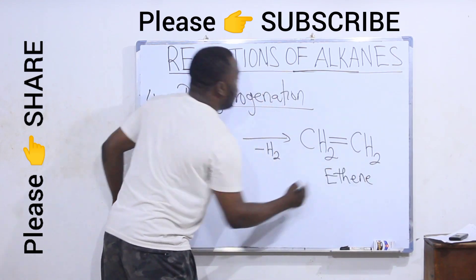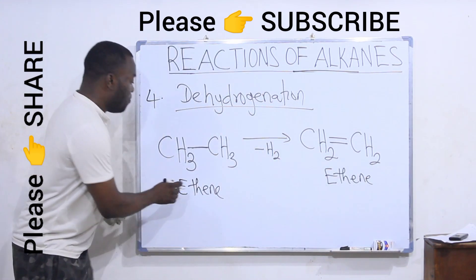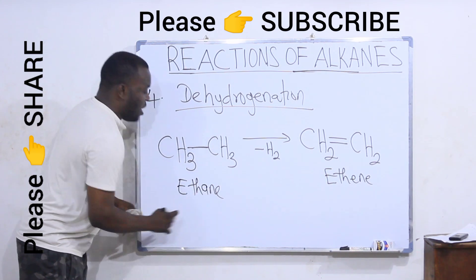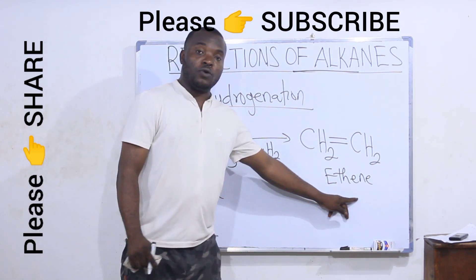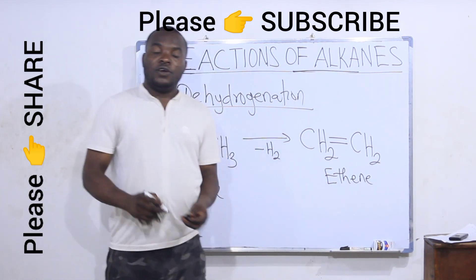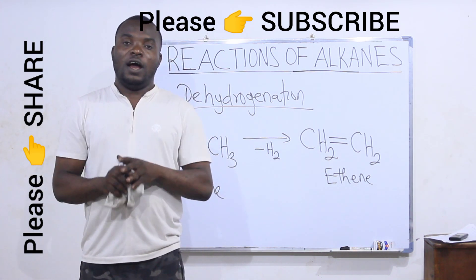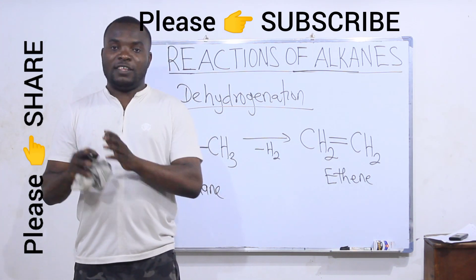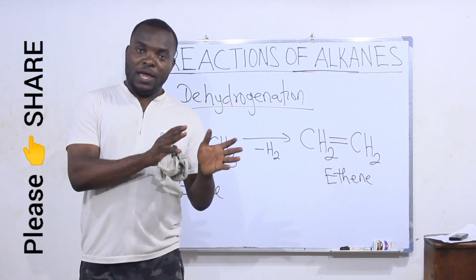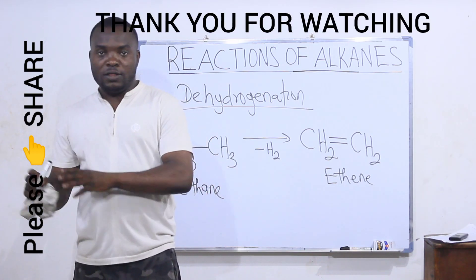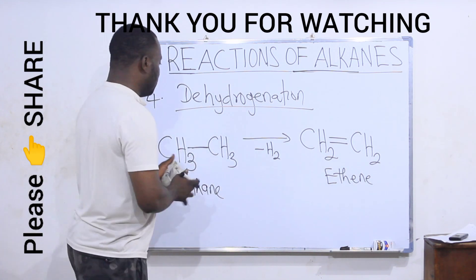So, removal of two hydrogen atoms from an alkane produces an alkene. If I dehydrogenate ethane, I will get ethene. If I dehydrogenate propane, I will get propene. And so on and so forth.